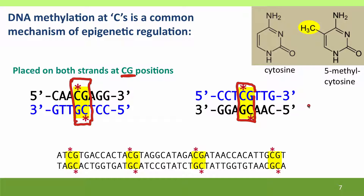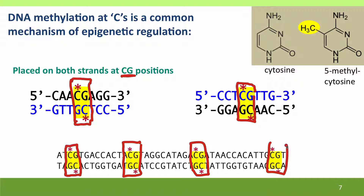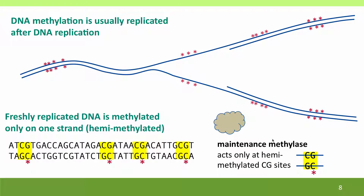Typically, when cytosines are methylated in DNA as a signal for epigenetic regulation — for turning a gene off — the cytosines in both strands of a CG dimer are methylated. This has the excellent property of being easy to replicate when DNA replicates, so that the daughter DNA molecules inherit the same methylation pattern that the parent molecule had. At a replication fork, we see a cluster of methylated CG pairs — they usually occur in clusters — with the C on each strand methylated.